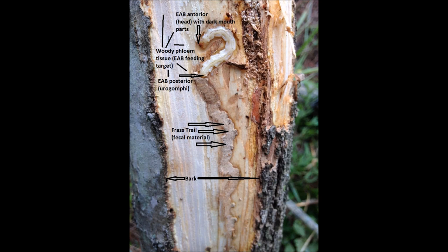The ash bark has been stripped away, and if you look at this diagram, which you can pause to see later, you'll notice that under the bark is a layer of woody phloem tissue. The emerald ash borers feed on that woody phloem and leave a trail of frass.